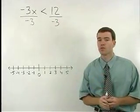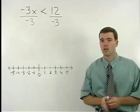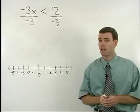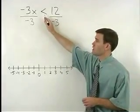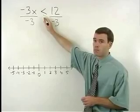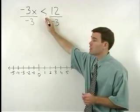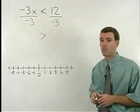But here's the rule you have to watch out for when solving inequalities: when you divide both sides of an inequality by a negative number, you must switch the direction of the inequality sign. So this less than in our original problem becomes greater than in our second step.